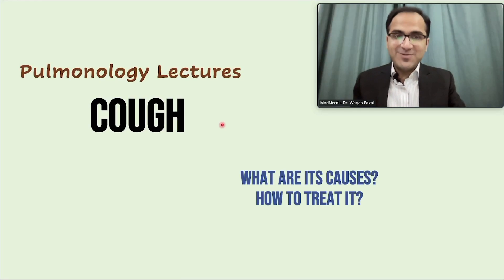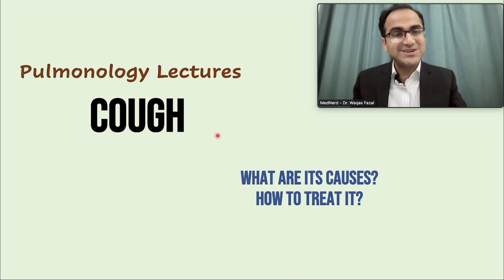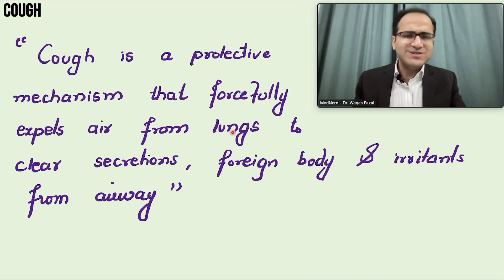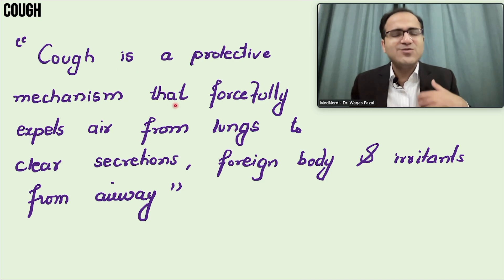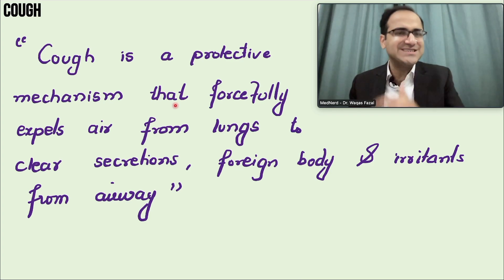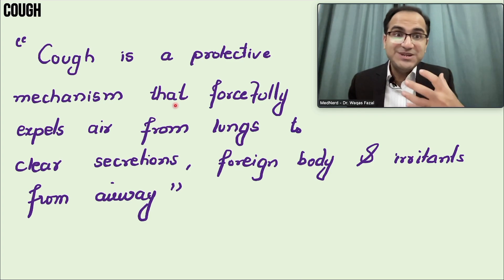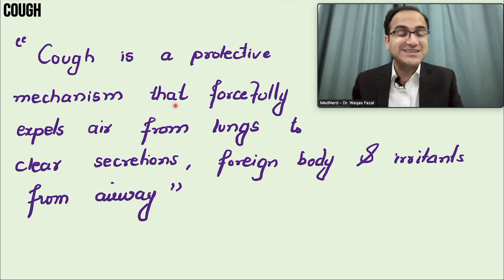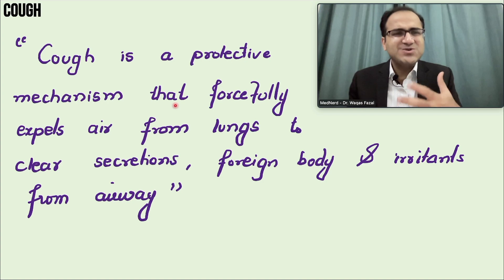In our pulmonology video series, we are going to talk about cough — the different types, causes, and how to treat it according to the cause. Cough is a protective mechanism that forcefully expels air out from the lungs to clear secretions, foreign bodies, and irritants from the airway. The speed of cough is 50 to 80 kilometers per hour.